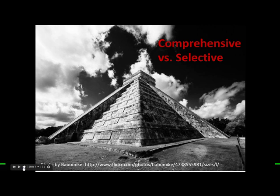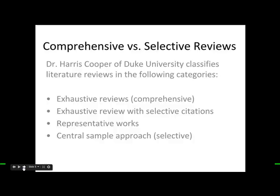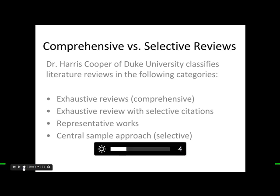Are you writing it for a thesis, a dissertation, just a paper? Are you writing it for a review article or for a grant? All these literature reviews are just a little bit different in scope, so you want to make sure you're addressing it according to the paper you're writing. Dr. Harris Cooper of Duke University has done a lot of research on literature reviews, so you can follow up with his work if you need more information. He breaks down literature reviews into four general topics from comprehensive to selective.